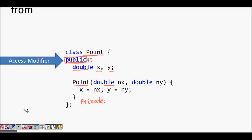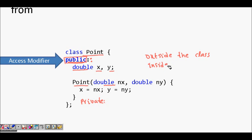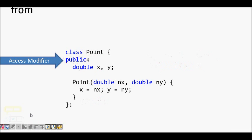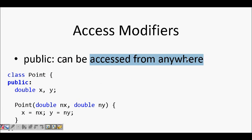What does public mean? Just like on the internet, public means it is available to everyone — anyone can see it, anyone can modify it. Here it means the same: these data members and functions can be accessed from anywhere. They can be accessed from outside the class, they can be changed, and of course they can be accessed from inside the class as well.